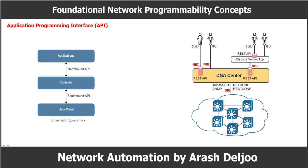Northbound APIs are often used to communicate from a network controller to its management software. For example, Cisco DNA Center has a graphical user interface (GUI) that is used to manage the network controller. When a network operator logs into a controller to manage the network, the information is leveraging Northbound REST-based APIs. Best practices suggest that traffic should be encrypted using TLS. REST APIs are used for communicating between two different devices over a network using HTTP, involving a REST client and a REST server.